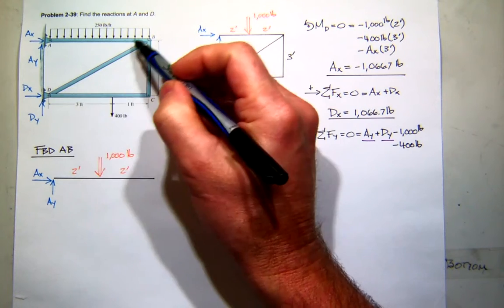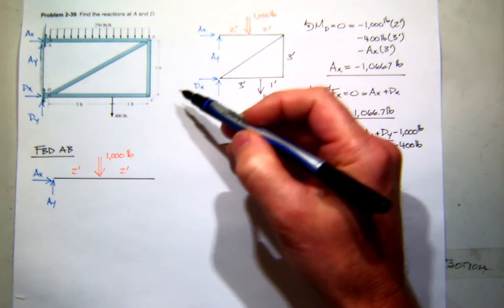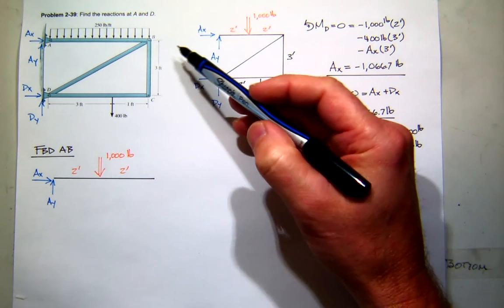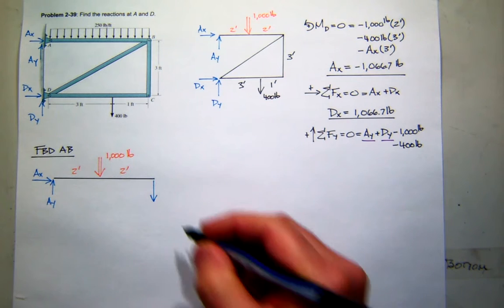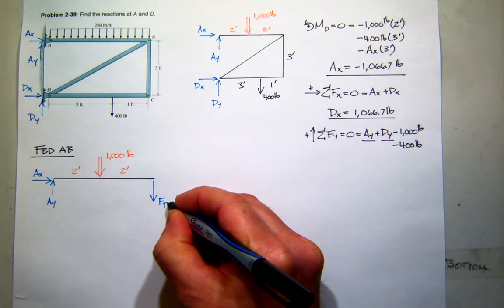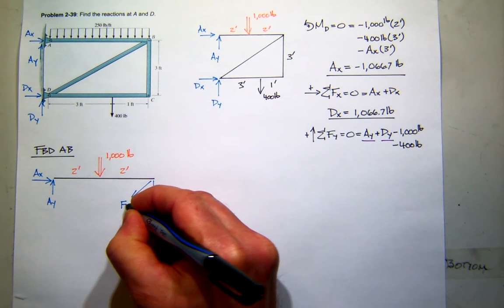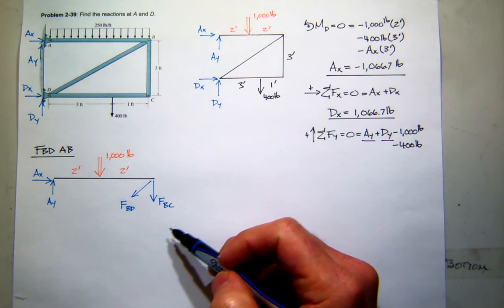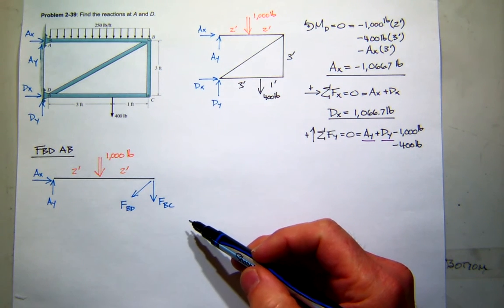So I've got this element BD and this element BC all connected at B. Now, what's unique about BD and BC? They're two force members, right? So I know that their line of action is just connecting the two points. So that means that I have a force, I'll assume it's in this direction. I'll call that the force in BC. And then I'll have another force going over here, which would be the force in BD. Now, do I care about those two forces for this problem? I do not.